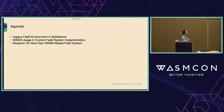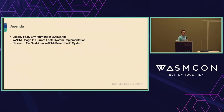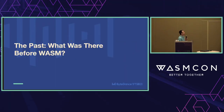The talk will be in three parts. First, we'll talk about our legacy fast environment. Then we'll talk about how we use WebAssembly in our current fast environment. Finally, we'll talk about our in-progress research on our next-generation WebAssembly-based fast system. And at the end I'll give some demos. Let's start with the fast system and what was there before we started using WebAssembly.